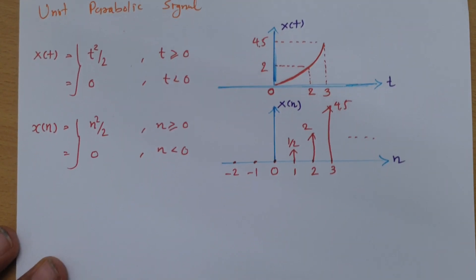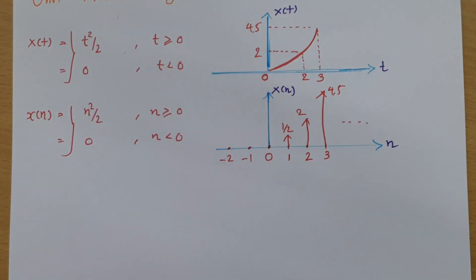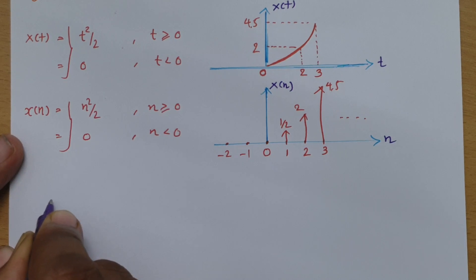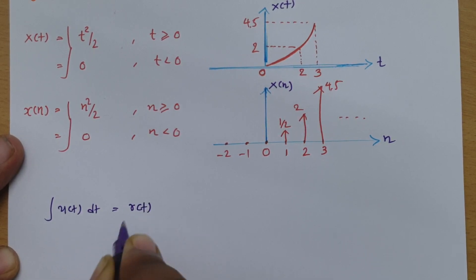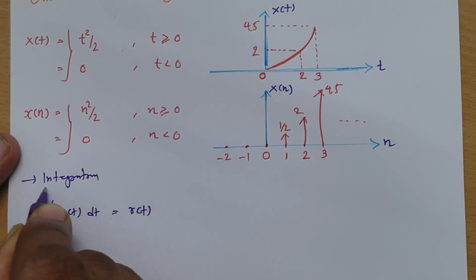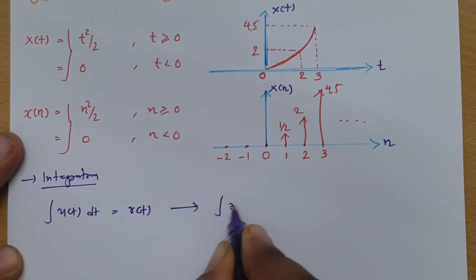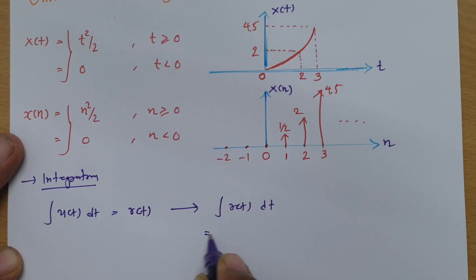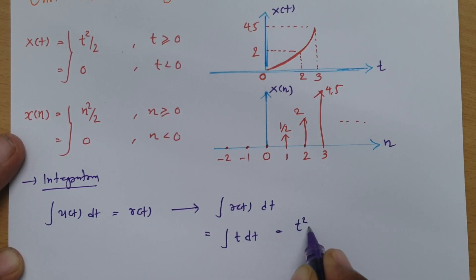Now I will explain the relationship of the unit parabolic signal with the ramp signal and the step signal. When you integrate the unit step signal, that results in the ramp signal. And if you integrate the ramp signal — that is, the integral of t dt — the result is t squared by 2, which is the parabolic signal.